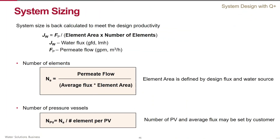Then you need to select the right type of membrane — you already know how to do that, as we talked about this previously. Once membrane selection is done, you need to properly size your system. These are straightforward guidelines: design capacity is used as a starting point, and following the design guidelines we can select the recommended system flux for a particular source water and back-calculate the required number of elements and pressure vessels.